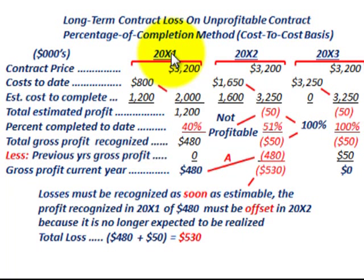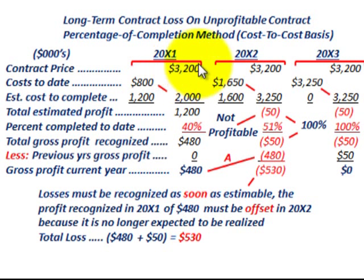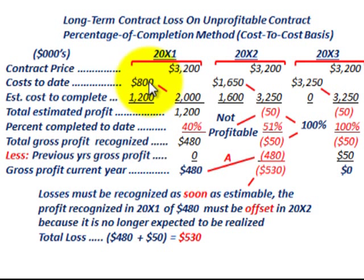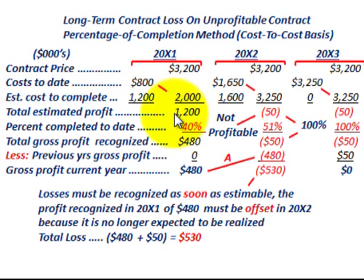Starting with year 20x1, our contract price is $3,200,000 (figures shown in thousands). Costs to date on the contract are $800K, and estimated cost to completion is $1,200K, giving us total estimated costs of $2,000K. Comparing that to our contract price of $3,200K, the difference gives us a total estimated profit of $1,200K.